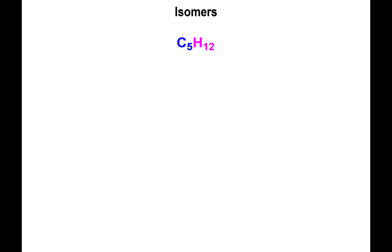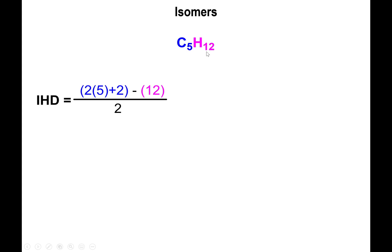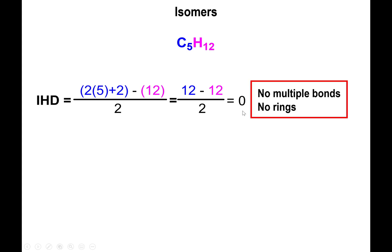Now we calculate the IHD for C5H12. For n = 5: (2×5 + 2) − 12 = 12 − 12 = 0, divided by 2 = IHD of 0. This tells us any structure we draw must contain no multiple bonds and no rings whatsoever. The first isomer is simply the five-carbon linear chain: pentane (C1–C2–C3–C4–C5).